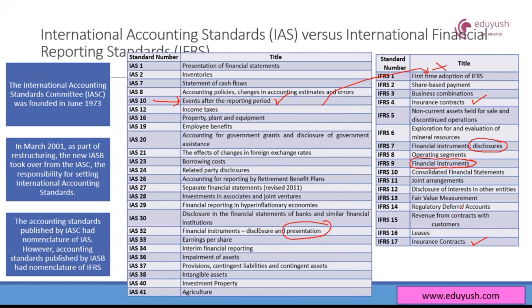A student asks: IASC is no more, right? Yes, the IASC is no more, but the accounting standards they set cannot just go away — they are still in prevalence. The fact that the body no longer exists doesn't mean the standards they issued are invalid. When the new body came in, they essentially just changed the naming convention — perhaps they preferred the IFRS name over IAS. It's just a name change, so don't worry about it. The structure for setting up the new standards was also a little different, which is why they gave it a new name.